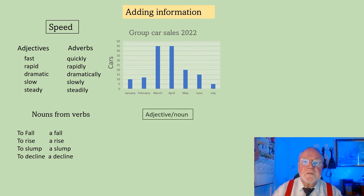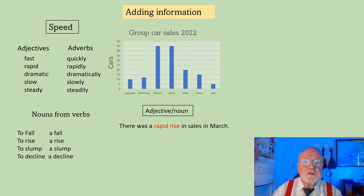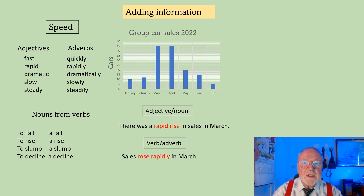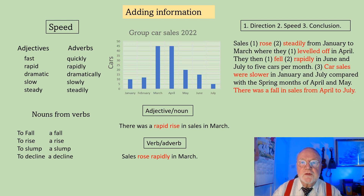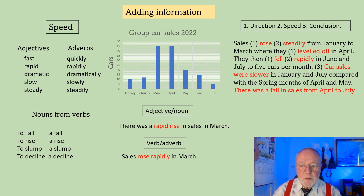Now let's look at how we actually use them. With an adjective-noun combination: 'There was a rapid rise in sales from March' — it tells us how fast the rise was; it was rapid. The verb-adverb combination: 'Sales rose rapidly in March.' It's good to put these adverbs after the rise or fall word. So we could write: 'Sales rose steadily from January to March where they leveled off in April. They then fell rapidly in June and July to five cars per month. Car sales were slower in January and July compared with the spring months of April and May. There was a fall in sales from April to July.' That makes it much more interesting.